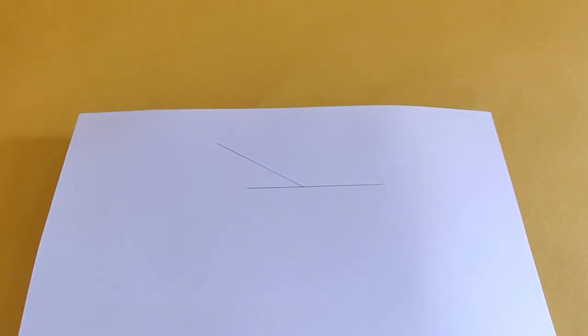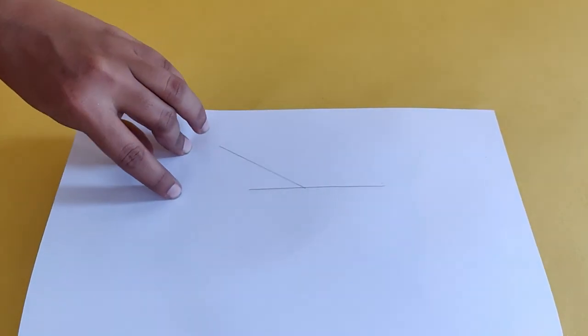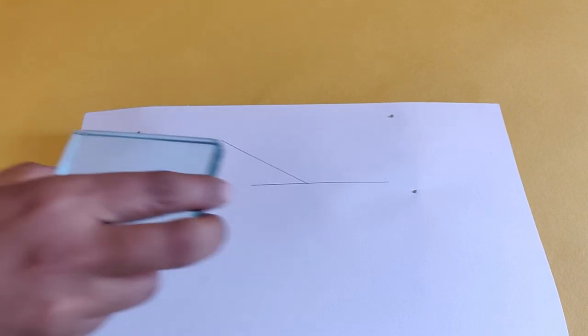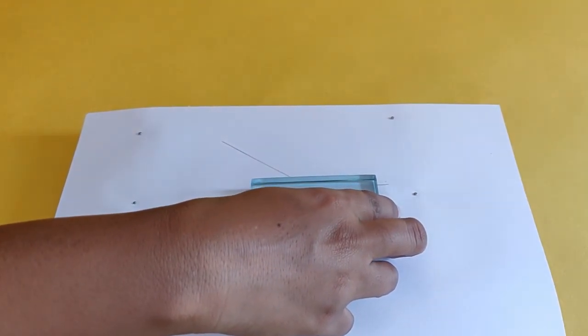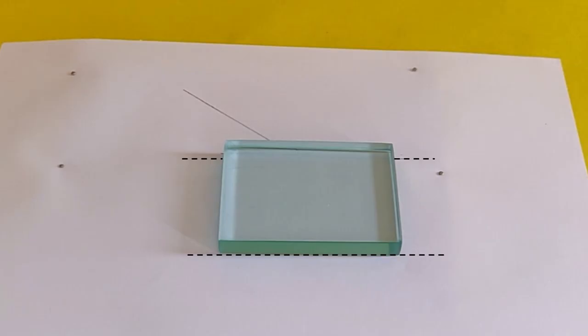Place this sheet of paper on a thermocall board and secure it to the board using ball pins. Now, place the glass slab along the first line that you drew and trace the opposite edge of the slab.